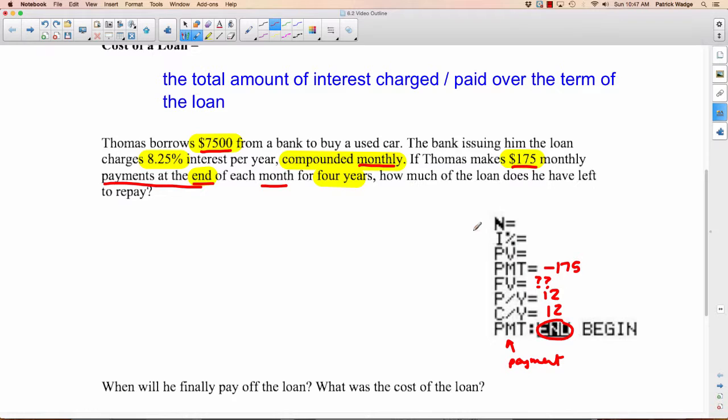Now, before, what we've been doing with all the investments is we made that amount negative because that was money out of your pocket, putting it into the bank. But this is money that's in your hands now. You have $7,500, so this is a positive amount. It's kind of backwards than what you'd expect because you're owing this money. But the way the TMV solver works here is if it's money in your pocket, it's positive.